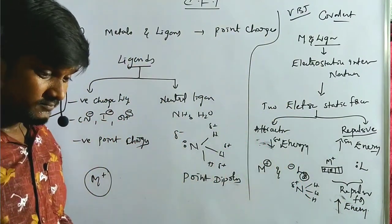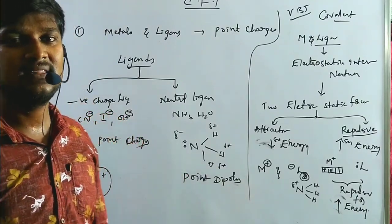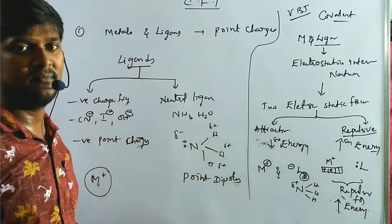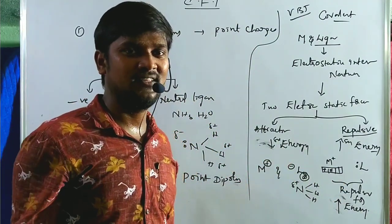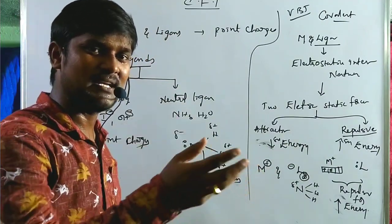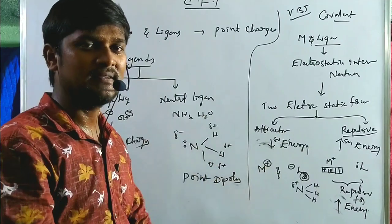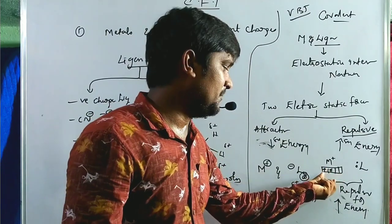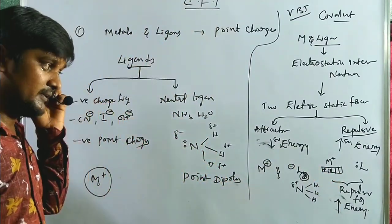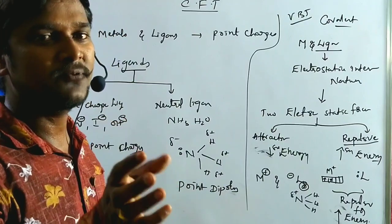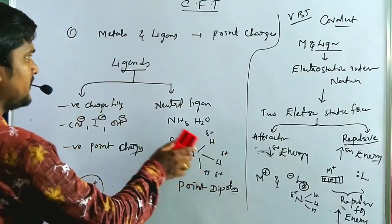Whenever ligands are far away from the metal, the five d orbitals are degenerate — meaning all five orbitals have similar energy. But whenever a ligand approaches the central metal atom and forms a complex, the degeneracy of the d orbitals is destroyed. To understand crystal field theory, we need to know the shapes of the five d orbitals.